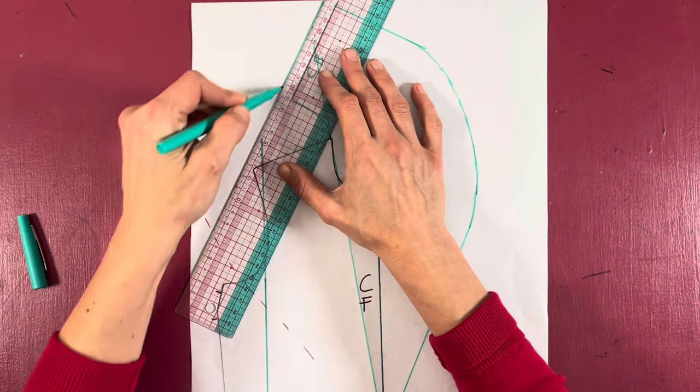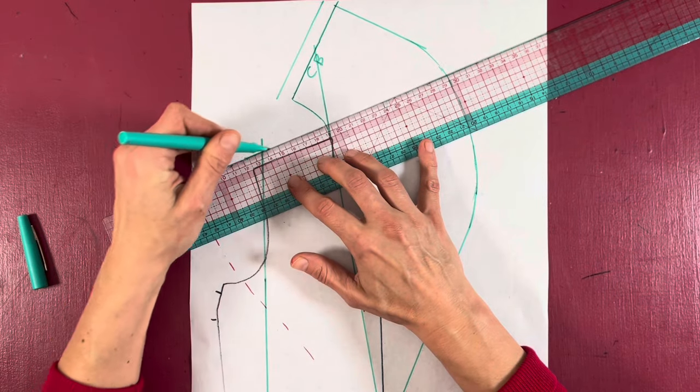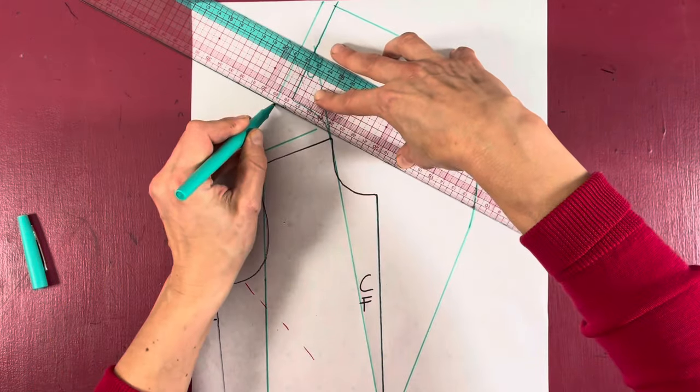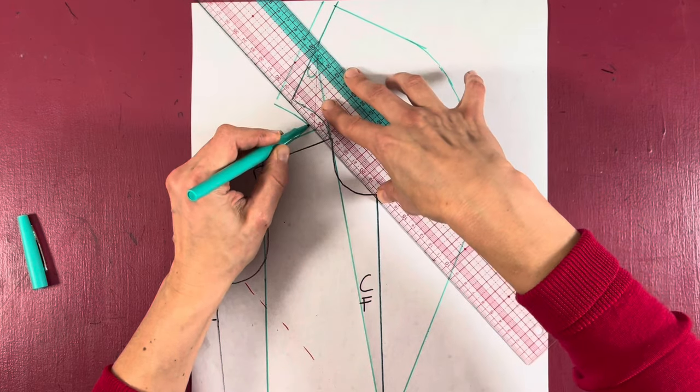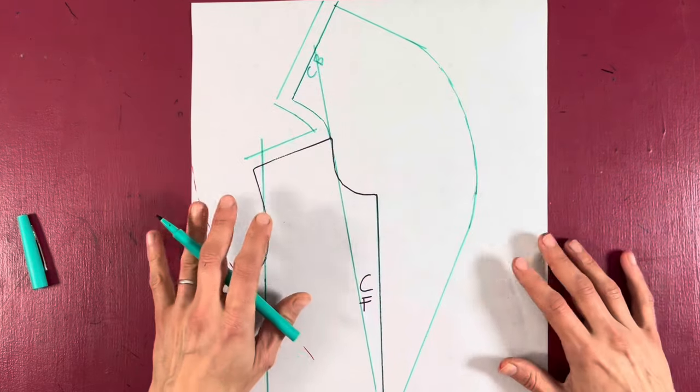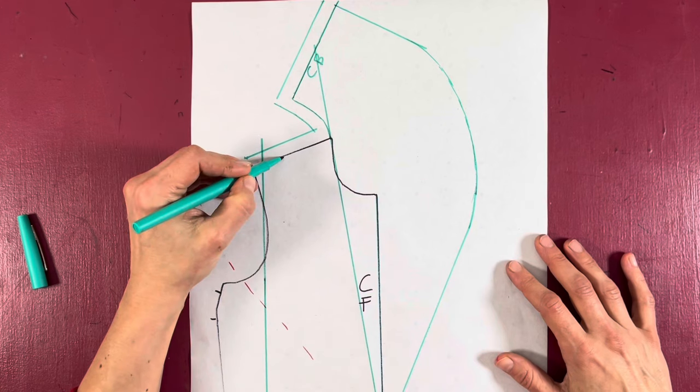This is your shawl collar with the stole. All you need to do is add seam allowance absolutely everywhere, because we're going to cut out two of these. So add your seam allowance wherever you want. For the first option, you're going to sandwich this